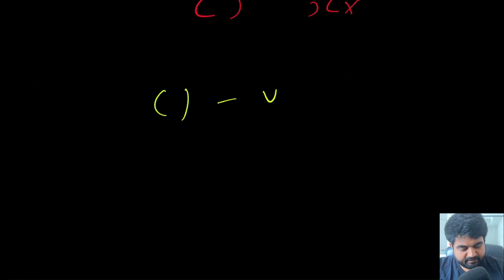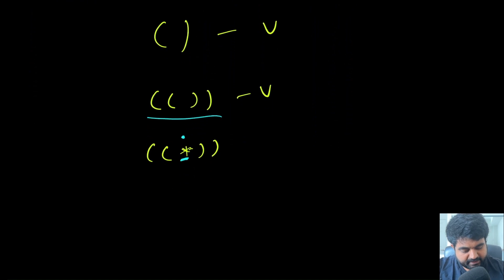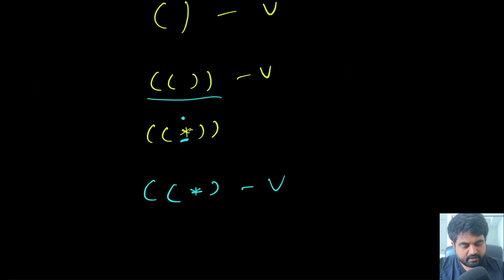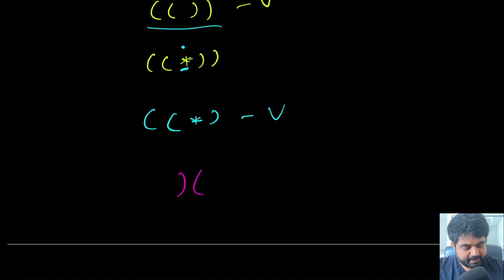For example, a simple parenthesis pair is valid. A string with a star is also valid — in that case we treat the star as an empty string. The only invalid scenarios are out-of-order parentheses or mismatched counts, such as having too many closing parentheses with no matching opens.